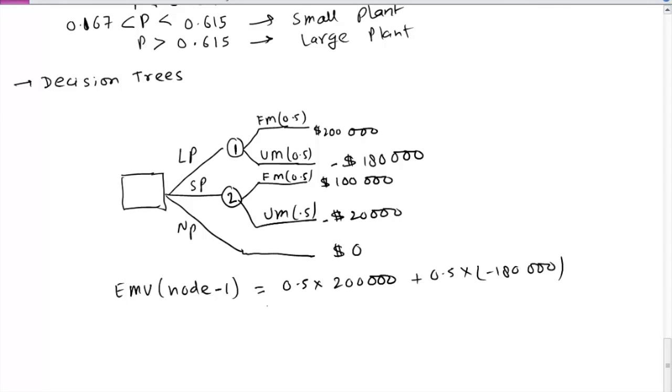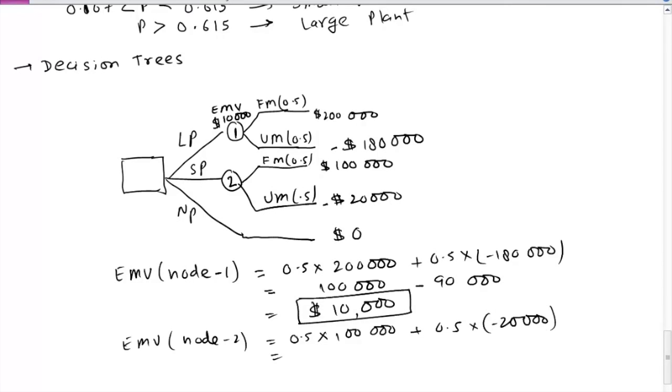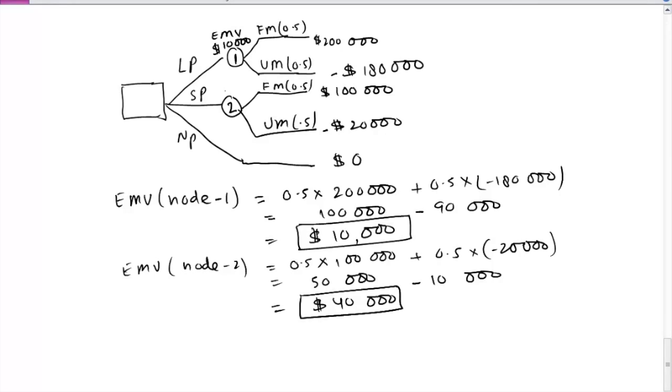Same calculation that we have been doing. So this 10,000, we can write EMV as 10,000 dollars. We can do the same thing at node 2, this is 40,000. Out of 10,000 and 40,000, obviously 40,000 is better so we can cross out large plant and no plant. The final value of making a decision in favor of small plant will pay off 40,000 dollars. It's very simple, you can see, to represent what we had done earlier in the form of a decision tree.